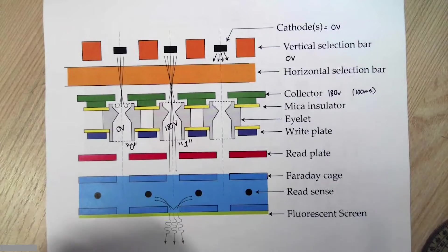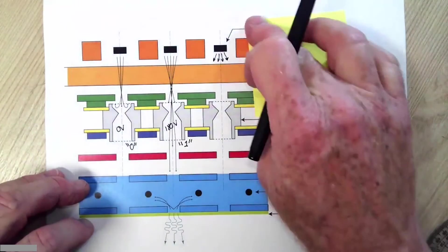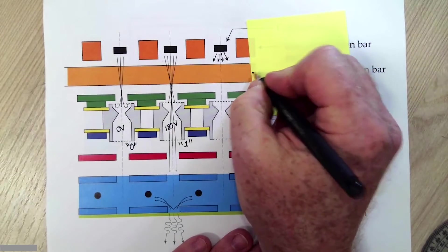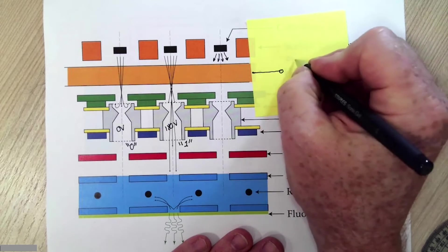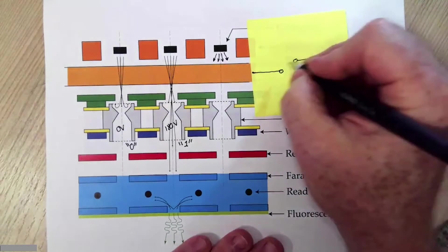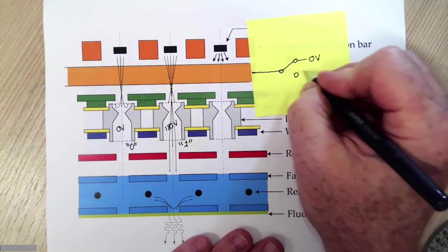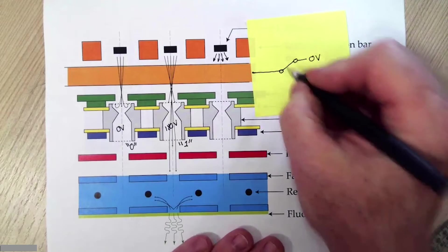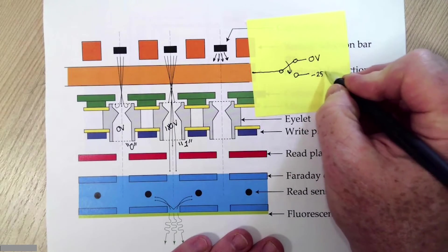So to deselect bits or bars, what I have to do is apply a very negative potential. Let's say we've connected a switch to this selection bar. We're going to provide our idle potential zero volts here. So normally, we would have this switch in that position. If I want to deselect this bar, what I need to do is throw this switch to minus 250 volts.